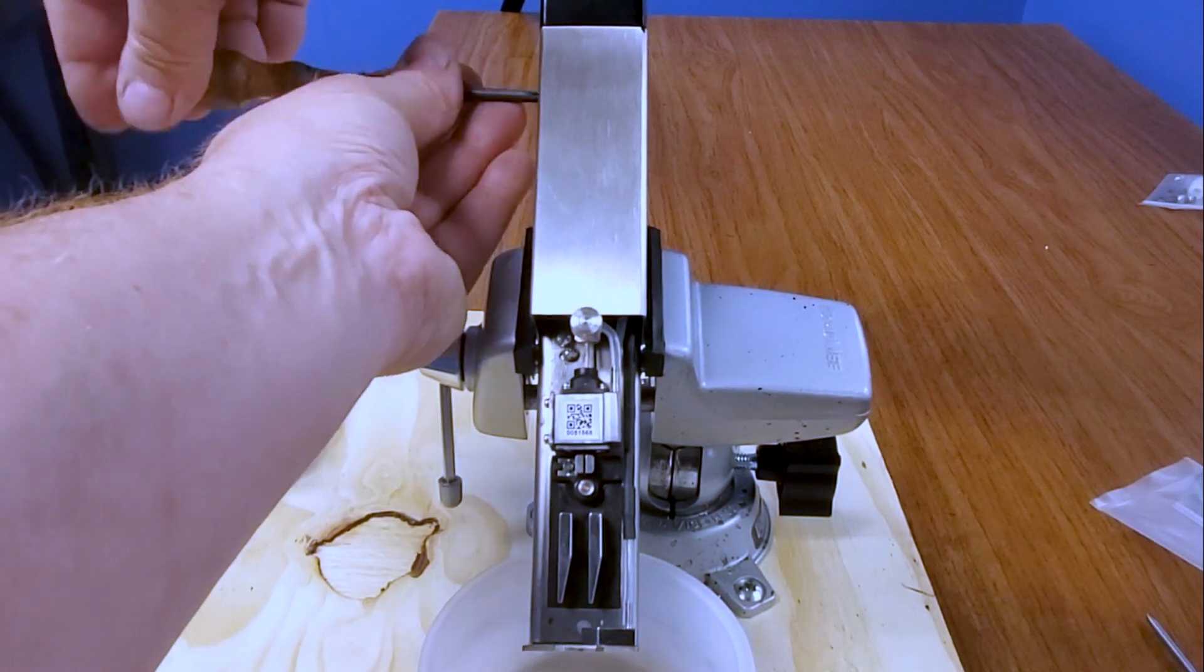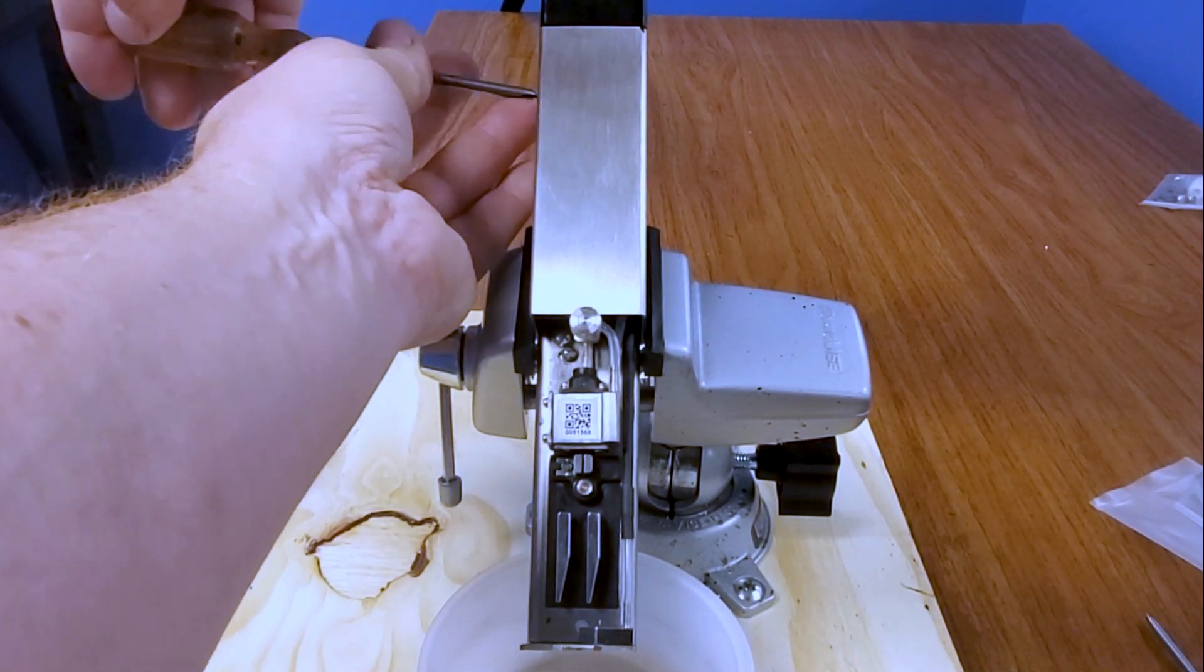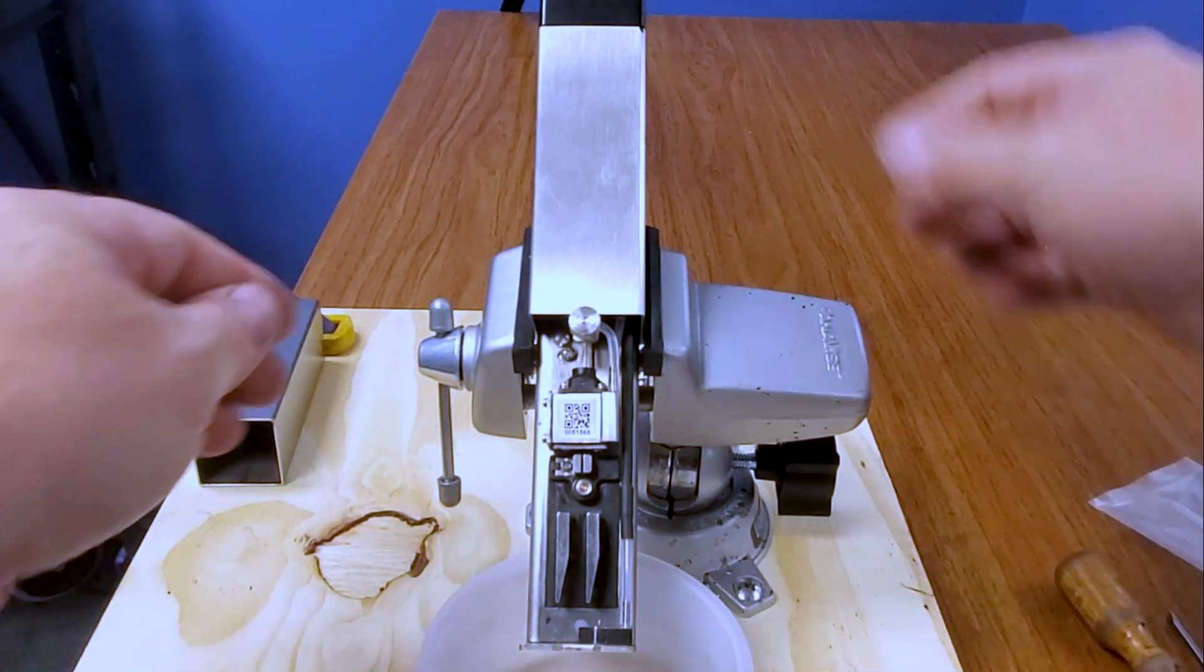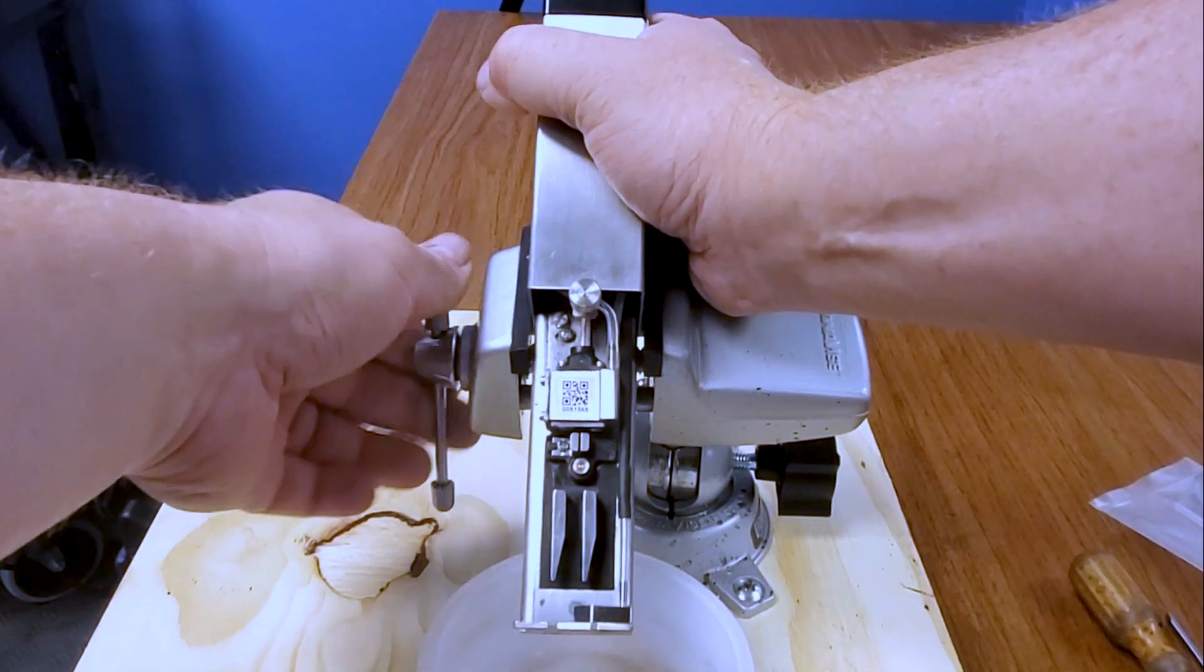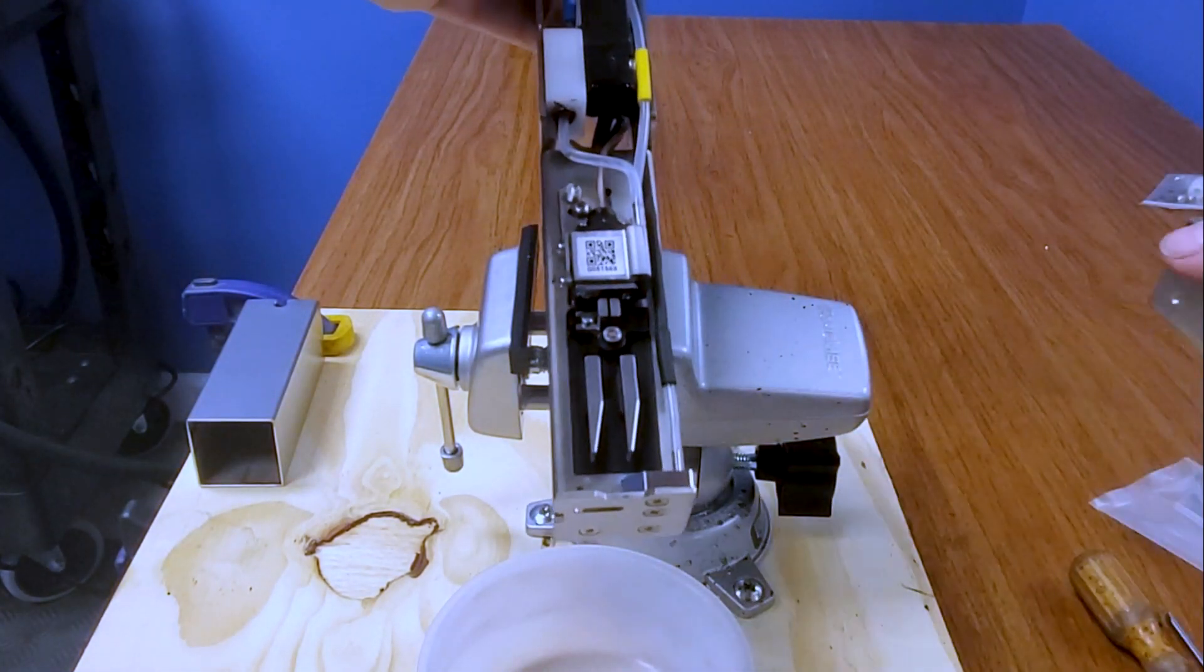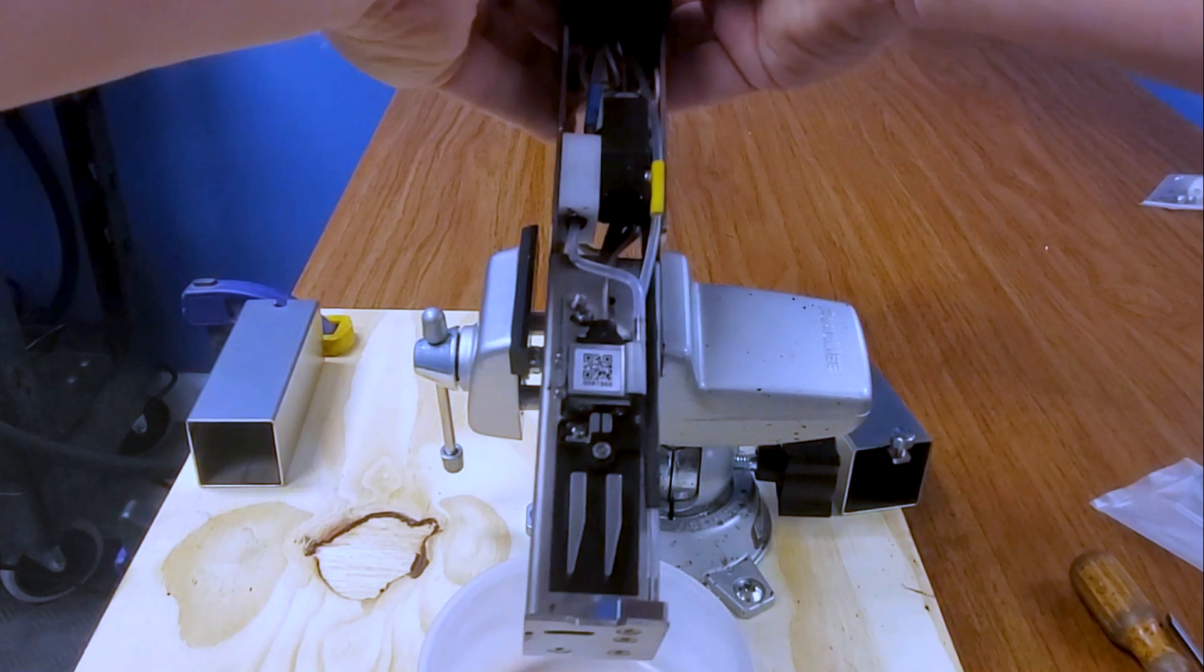So with the four screws out here, we will remove this upper cover from our printhead. Just slide it forward and off and then we'll be able to see the rest of the printhead exposed.